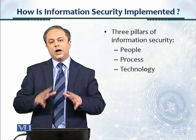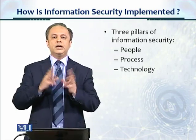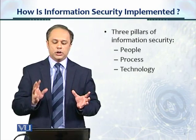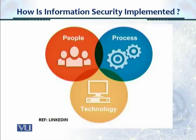When we talk about how information security is implemented, it is important to look again at the three pillars of information security that we already talked about, which are people, process, and technology. Let's look at this diagram. People, process, and technology are the core three functions, also called the information security triad. The entire information security domain always consists of these three entities working together holistically, irrespective of what activity we are considering or conducting in information security.